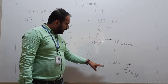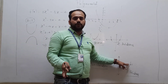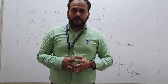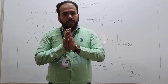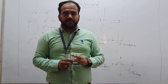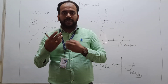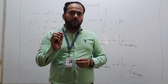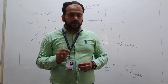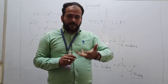So students, it is very easy to find the number of solutions just by looking at the graph. Your Exercise 2.1 is totally based on this — finding the number of solutions just by looking at the graph. I have told you how to find and locate the zeros. Let's quickly wrap up and move to one more important topic.